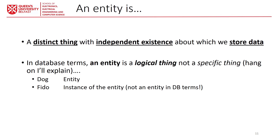An entity in a database context is a logical thing, not a specific thing. For instance, we can have one entity like 'dog,' which must exist as a concept, and 'Fido' which is an instance of that entity — in this case, the instance is not going to be the entity itself. These are some examples of entities.